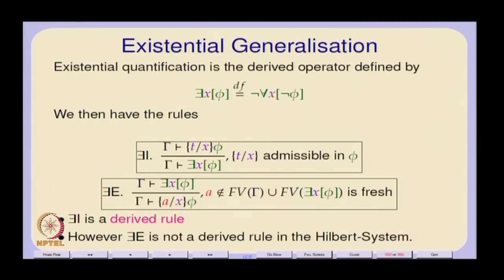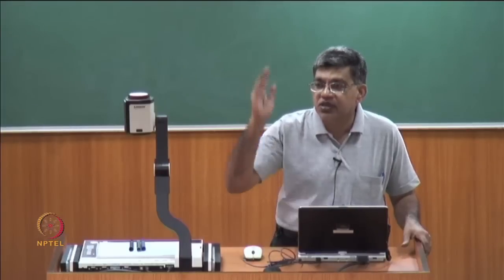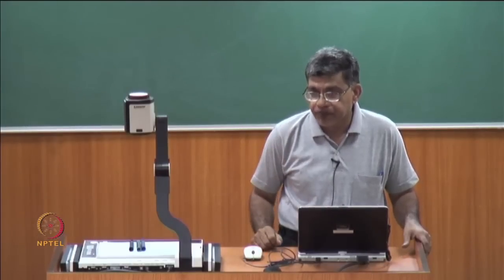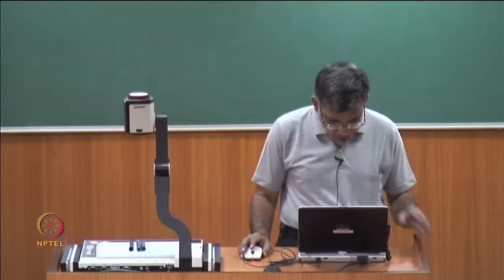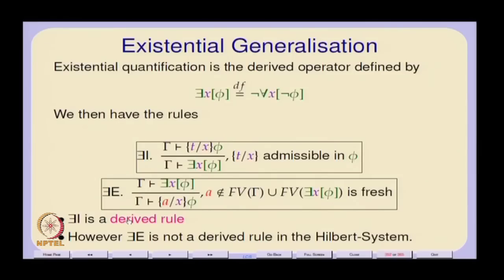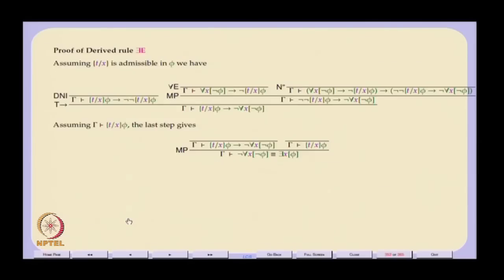The basic minimum condition for 'a' is that it should not be a free variable of any of the assumptions gamma, and it should not be a free variable of there-exists-x phi. The third important thing is that while there-exists-I is a derived rule, there-exists-E cannot be derived in the Hilbert system. Yet in any mathematical proof, whenever you have an existential statement, you immediately put in a symbol for a constant A and proceed — so the question is: does this make the Hilbert system incomplete?